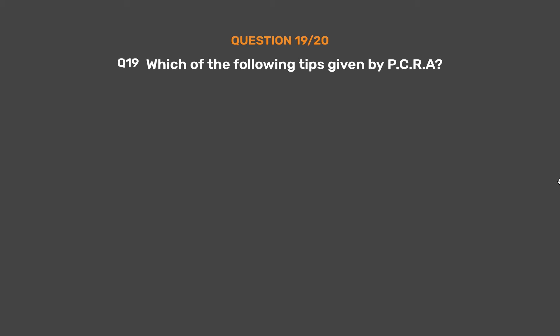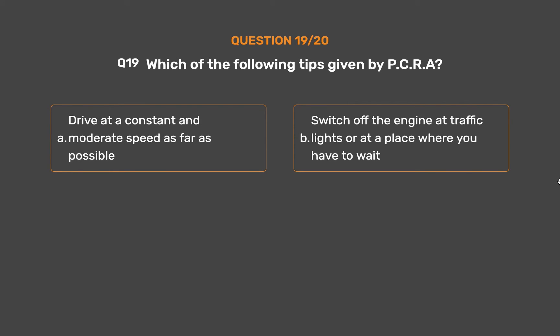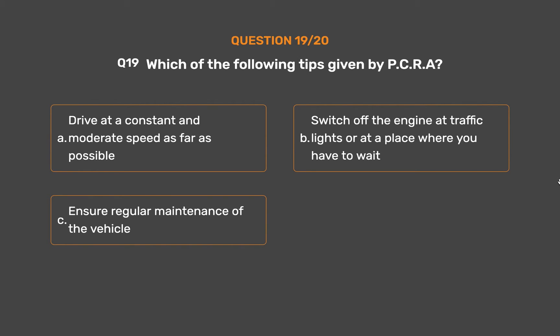Question number 19: Which of the following tips are given by PCRA? Option A: Drive at a constant and moderate speed as far as possible. Option B: Switch off the engine at traffic lights or at a place where you have to wait. Option C: Ensure regular maintenance of the vehicle. Option D: All of these.